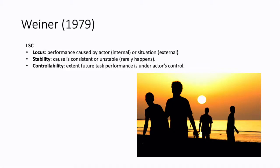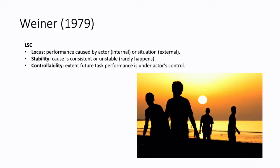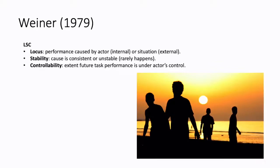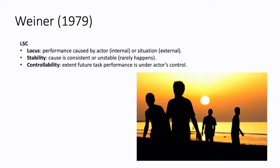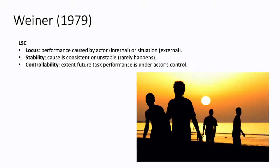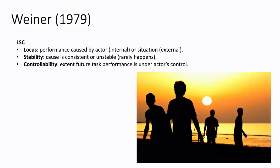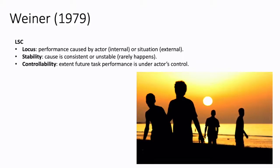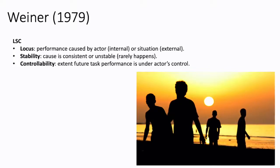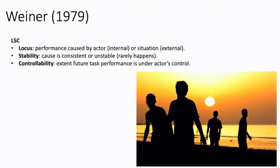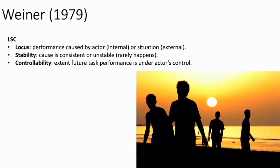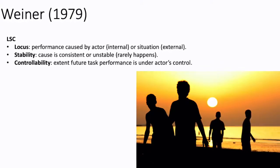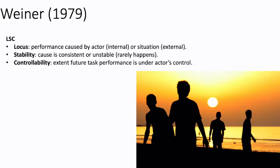Weiner, in 1979, proposed that performance attributions were brought about from three types of information in attribution-making, coined in the acronym LSC: Locus, Stability, and Controllability. Locus is to do with performance caused by the actor — internal — or the situation — external. Stability is whether the cause is stable or unstable, whether it is consistent or occurs all the time. Controllability is the extent to which future task performance is under the actor's control.